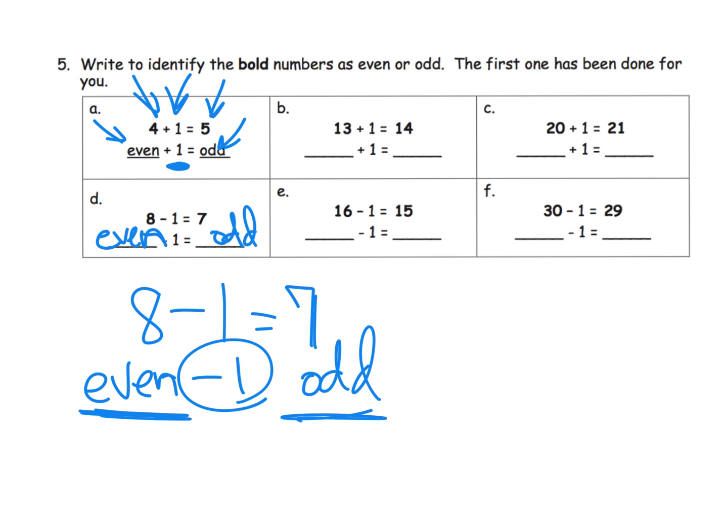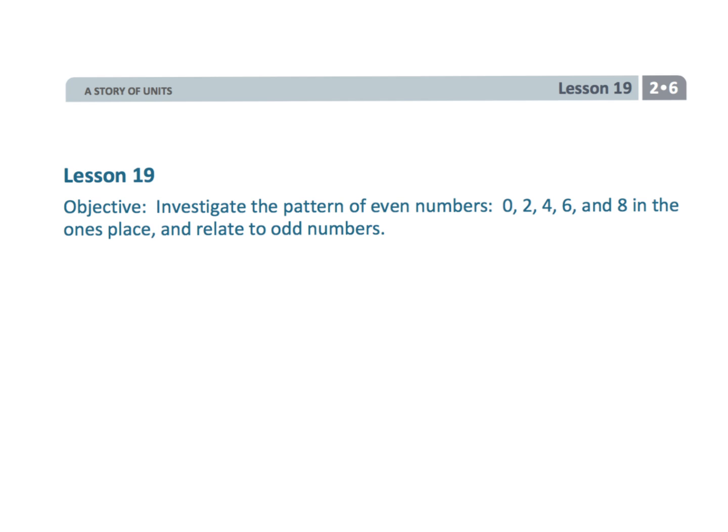So parents and teachers, the idea of this is we want students to be playing with numbers. We want them to notice patterns, and some of those patterns are going to be geometrical, some of them are going to be numerical like this, some of them are going to be logical. So we want students to be playing with math and coming up with these conclusions on their own. And that wraps up second grade module six lesson nineteen, investigating patterns of evens and odds.